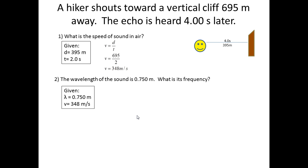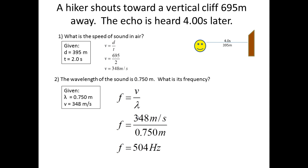The given is wavelength equals 0.75 meters. The velocity from the last question is 348 meters per second. Using the formula of frequency equals velocity over wavelength, plugging in the information given, 348 meters per second over 0.75 meters would give us frequency equals 504 hertz.